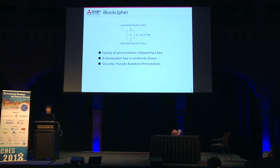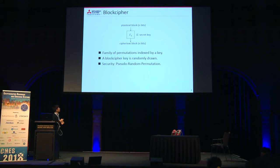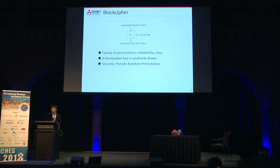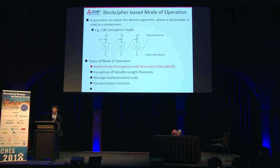A block cipher is a family of permutations indexed by a key. It accepts a plaintext block of n bits and a secret key K, and returns a ciphertext block of n bits. For a fixed secret key, it becomes an n-bit permutation. The block cipher key is randomly drawn, and in a block cipher-based mode of operation, the key to the block cipher is assumed to be a pseudorandom permutation. A block cipher-based mode of operation defines the procedure to realize the desired algorithm, where the block cipher is used as a component.